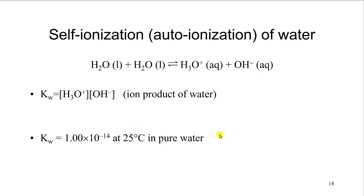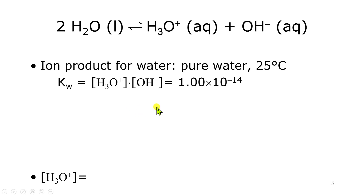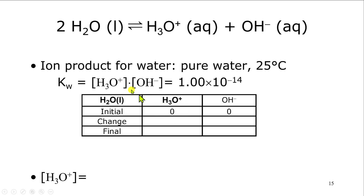You can also figure out the concentration of hydronium and hydroxide in pure water at room temperature by setting up an ICE table. If you initially have zero ionization, the change is going to be x and x. So the equilibrium concentrations are both x, and Kw equals x times x, or x squared.